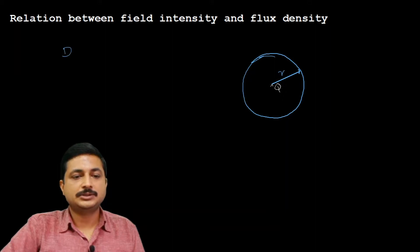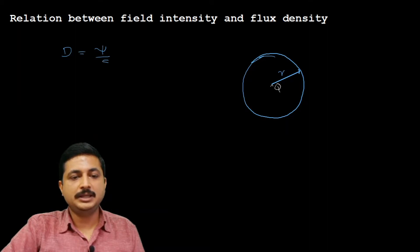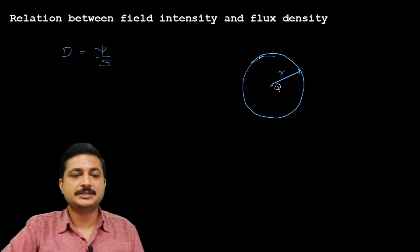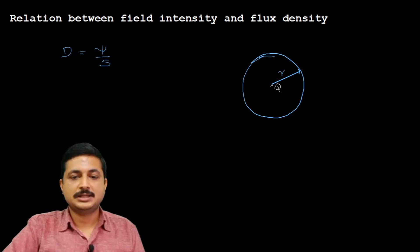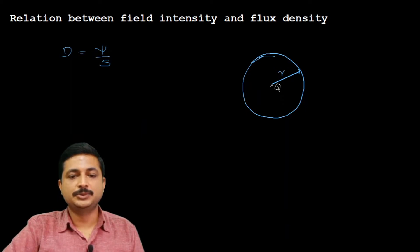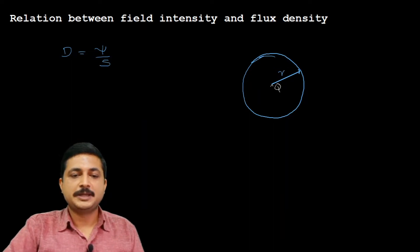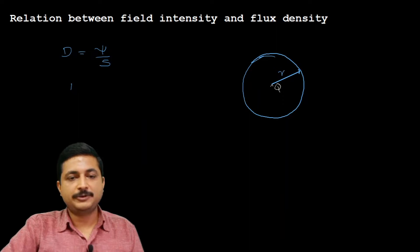From the definition of electric flux density, D is the total flux coming out of the surface divided by the surface area. So D equals ψ divided by S, where ψ is the total flux and S is the surface area. The flux coming out of the surface is due to the positive point charge Q, and the surface area is the surface area of the sphere, which is 4πr². So D equals ψ divided by 4πr².